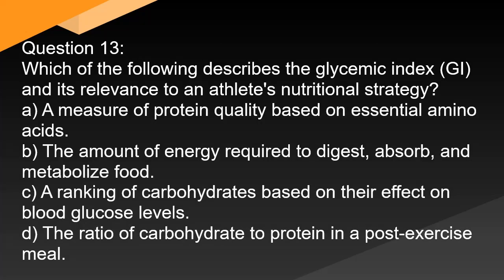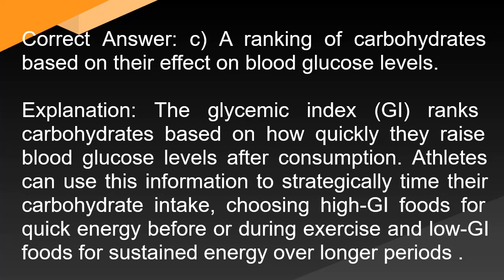Question 13: Which of the following describes the glycemic index (GI) and its relevance to an athlete's nutritional strategy? A. A measure of protein quality based on essential amino acids. B. The amount of energy required to digest, absorb, and metabolize food. C. A ranking of carbohydrates based on their effect on blood glucose levels. D. The ratio of carbohydrate to protein in a post-exercise meal. Correct answer: C. The glycemic index ranks carbohydrates based on how quickly they raise blood glucose levels after consumption. Athletes can use this to strategically time carbohydrate intake — choosing high-GI foods for quick energy before or during exercise, and low-GI foods for sustained energy over longer periods.